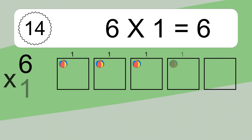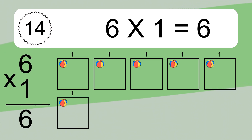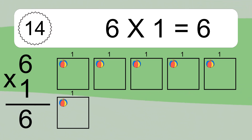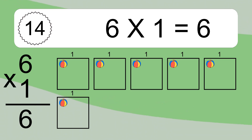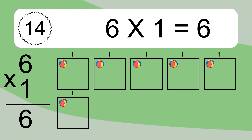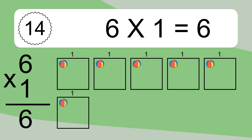6 times 1 equals what? We have 6 boxes, and each box has 1 colorful ball inside. If you count all the balls in all the boxes together, you will have 6 times 1 balls. This equals 6 balls.